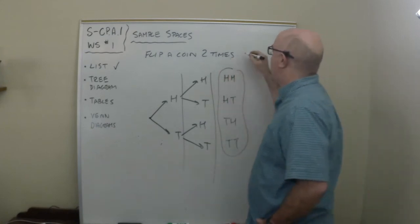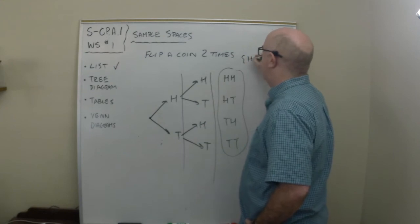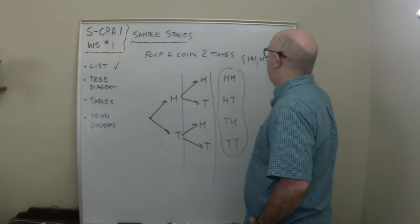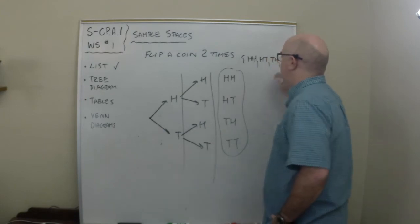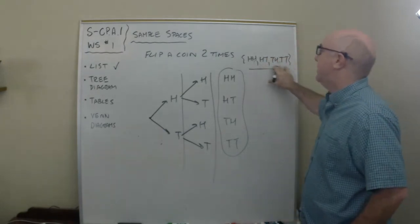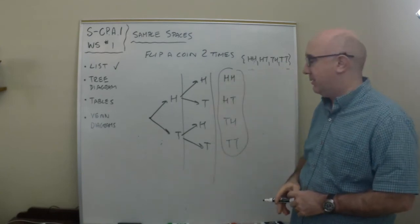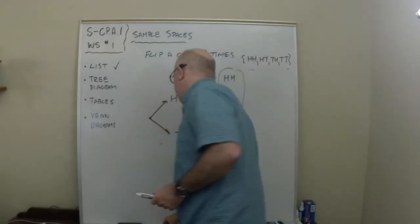Now we could have just listed that out. Head head, head tail, tail head, and tail tail. We could have just made a list of those things, but we could also do it through a tree diagram. We could also use tables.